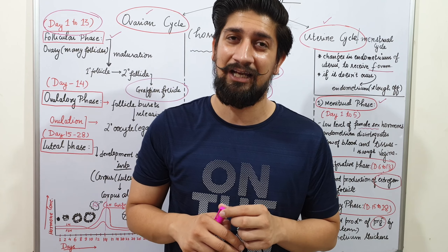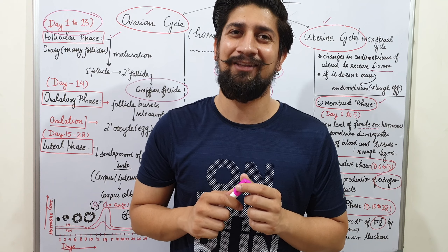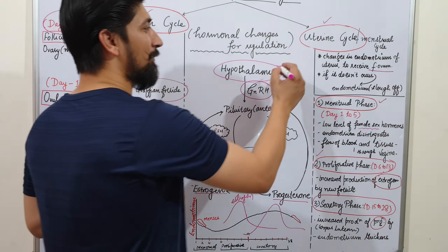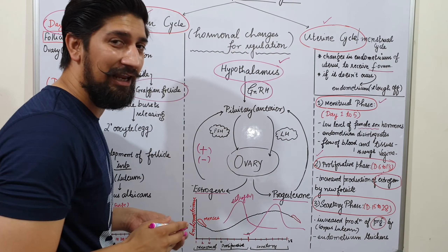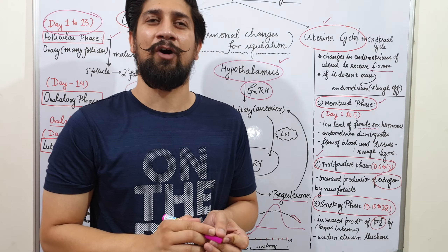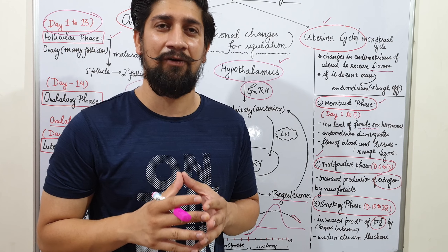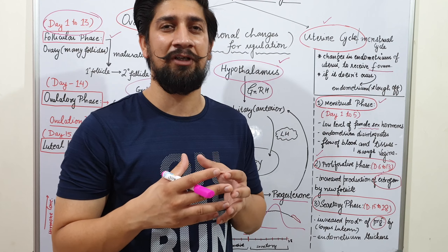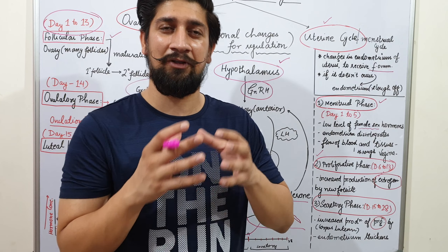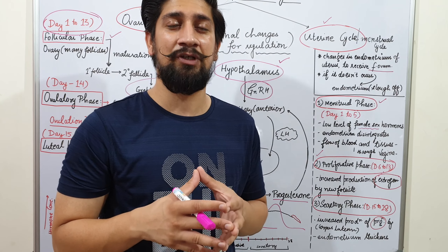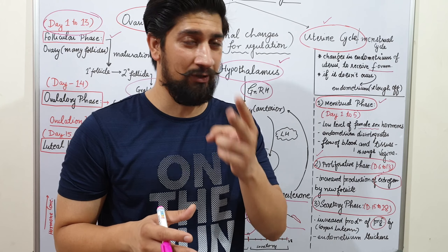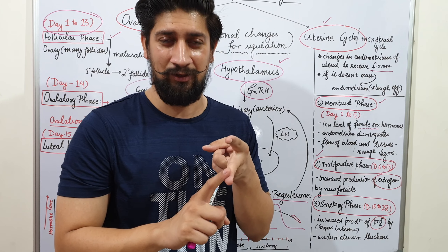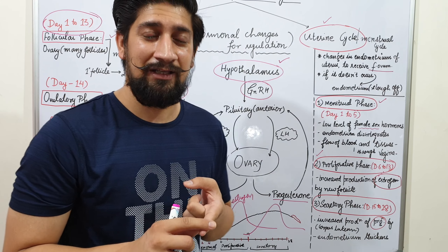The hypothalamus is the master gland. Let's look at the feedback mechanism. The hypothalamus releases a hormone called gonadotrophin releasing hormone (GnRH), and this hormone acts on the pituitary gland. From the anterior portion of the pituitary gland, follicle stimulating hormone (FSH) and luteinizing hormone (LH) are released.